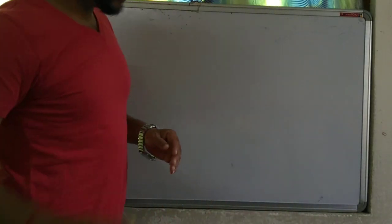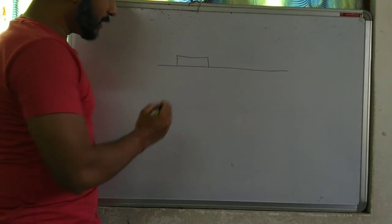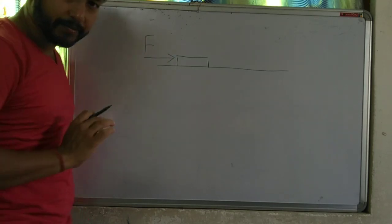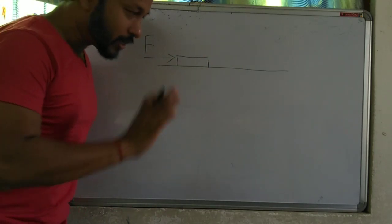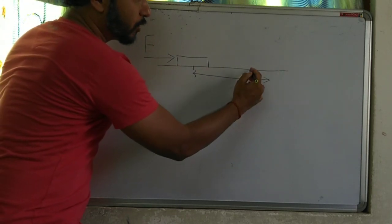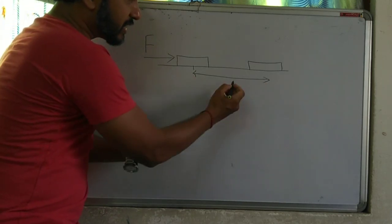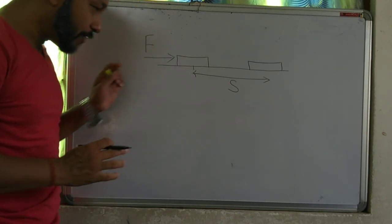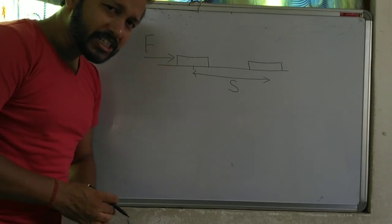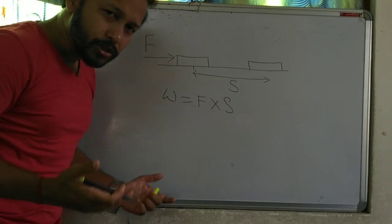Now we shall discuss the mathematical formula to calculate work. Say this is the table and this is the book. I am pushing the book by a force F, and because of that force the book has changed its position. If S is the distance covered and F is the force applied, then the amount of work is equal to force multiplied by distance — simple formula: Work = F × S.